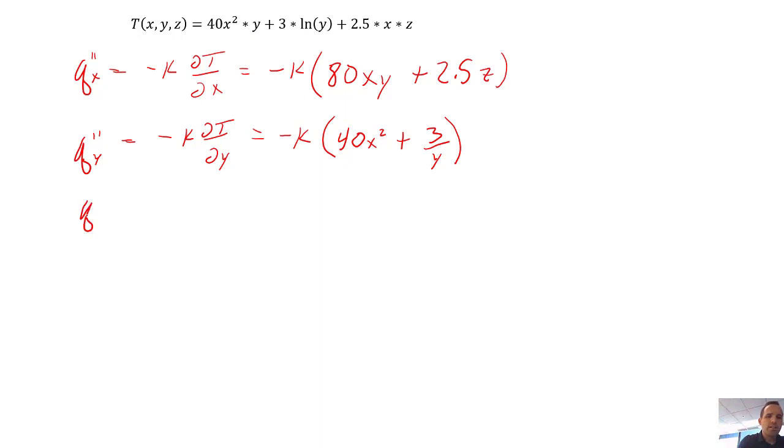Finally, the z term minus k times the partial with respect to z equals minus k. And there is no z component here, no z component here, there's only one here. So that is 2.5 times x.